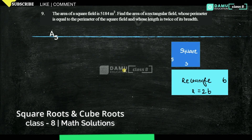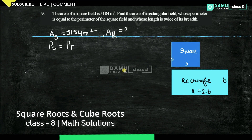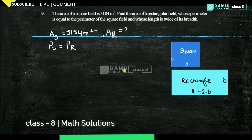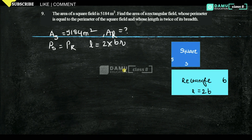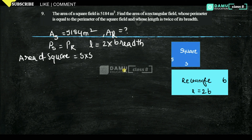So what is the area of the square? Let the area of the square be 5184 square metres. Then we have to find the area of rectangle AR. The condition given is: perimeter of square equals perimeter of rectangle, and length of rectangle equals twice its breadth. From the area we calculate the side: side squared equals 5184, so S equals the square root of 5184.